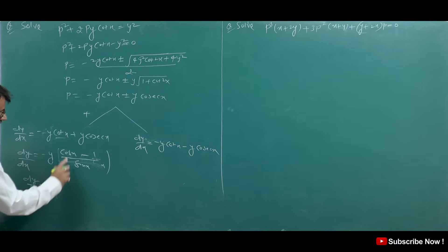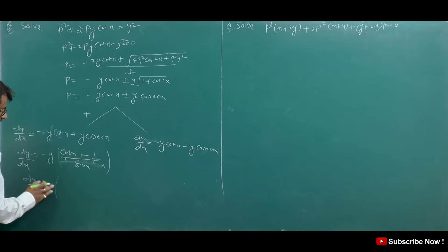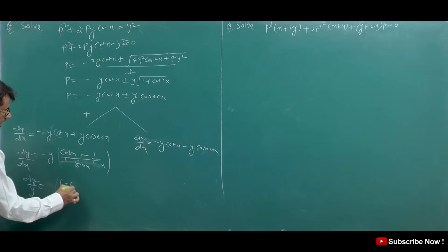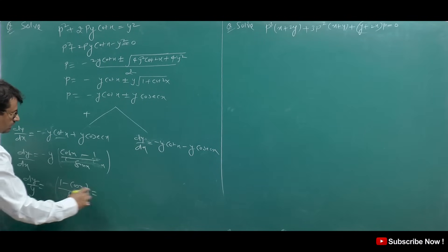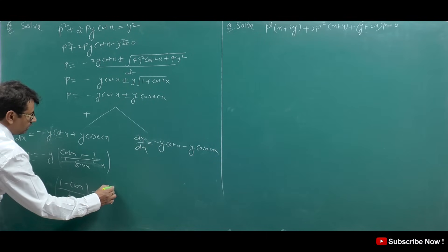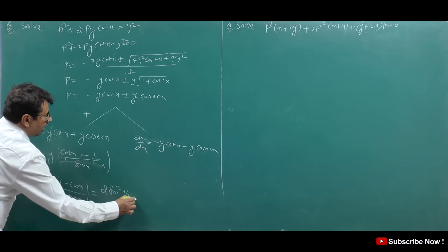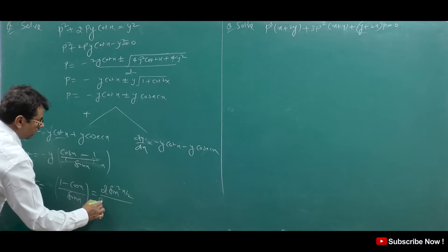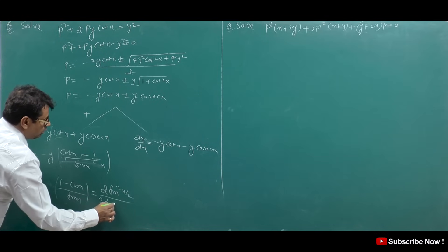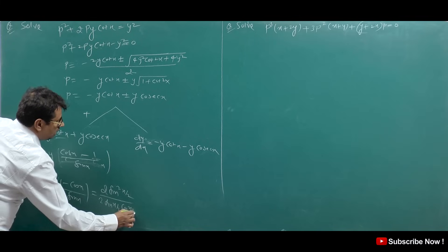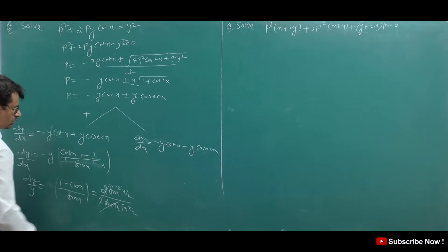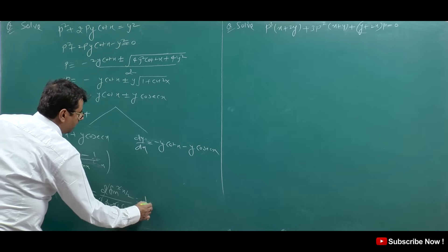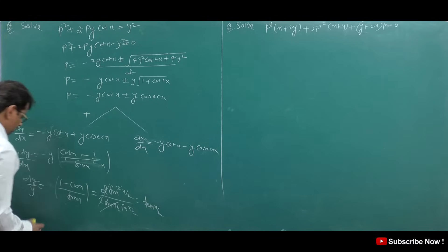Now, (cos x - 1) = -(1 - cos x) = -2sin²(x/2), and sin x = 2sin(x/2)cos(x/2). So (cos x - 1)/sin x = -2sin²(x/2) / [2sin(x/2)cos(x/2)] = -tan(x/2). Therefore dy/y = -tan(x/2) dx.